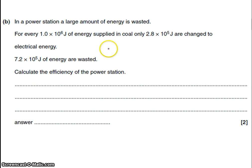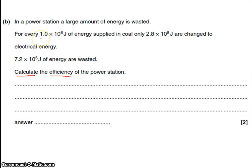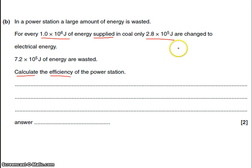The next question is about efficiency. You need to look really carefully at an efficiency question to see which bit of energy goes in and which bit comes out. It says for every 1.0 × 10⁶ joules of energy supplied — so that's the energy going in — only 2.8 × 10⁵ joules are changed into electrical energy, which is the energy that comes out. When doing efficiency, you do the energy out divided by the total energy in, times 100.